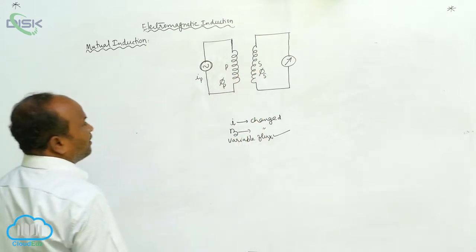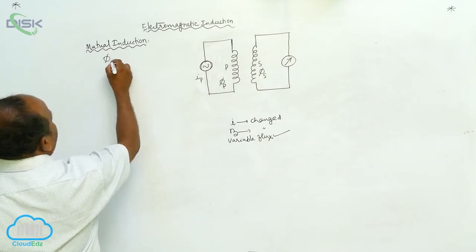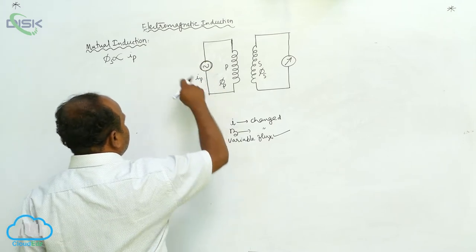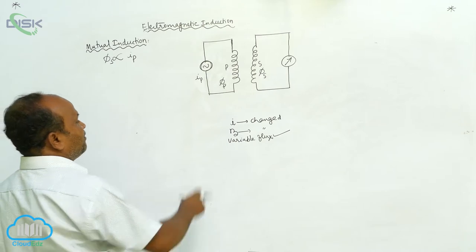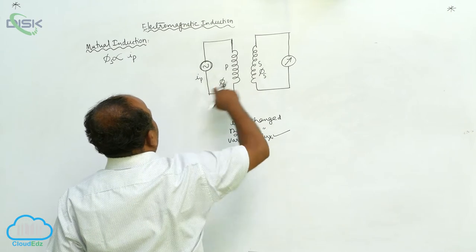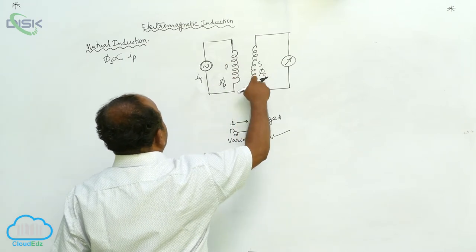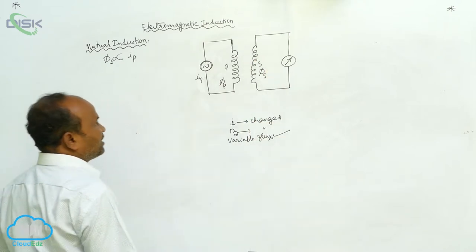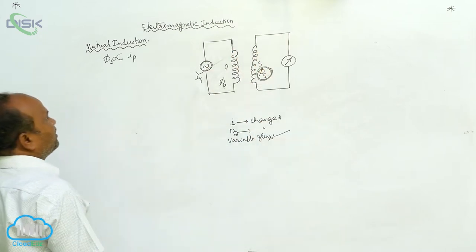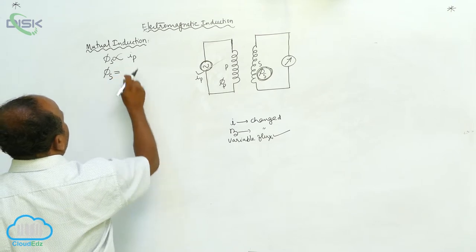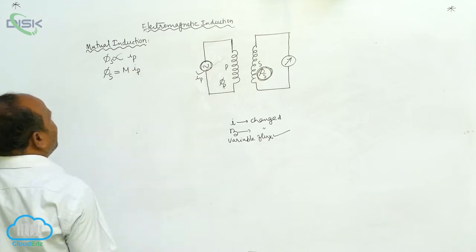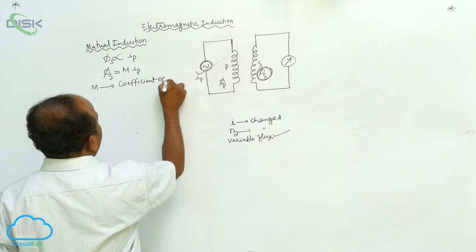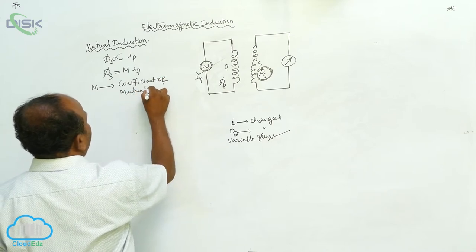The change in flux in the secondary coil is directly proportional to the current in the primary coil. As we are changing the current in the primary coil, a variable magnetic flux is produced. Nearby the first coil there is a secondary coil, so in the secondary coil also there is a variable magnetic flux, represented by ΦS. Therefore, the variable magnetic flux in the secondary coil depends upon the current in the primary coil. Therefore, ΦS equals some constant M into IP, where M is the coefficient of mutual induction.